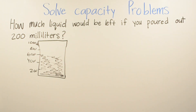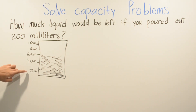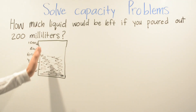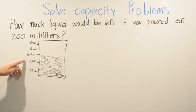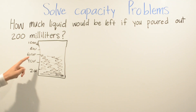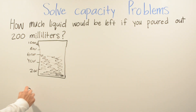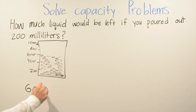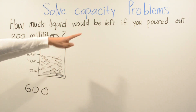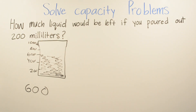In this problem, we have to find how much liquid would be left if we poured out 200 milliliters. Let's find our number. Can it be 200? No, because it keeps on continuing. Can it be 400? No. Can it be 600? Yes, because it stops right there. Pour out means take out, so we have to subtract.